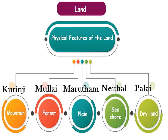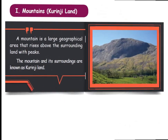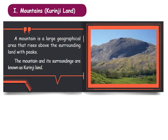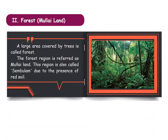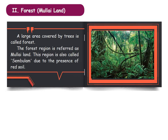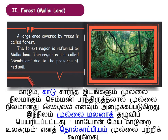The area which rises above the surrounding land with peaks is called mountains. The mountain and its surroundings are called the Kuringi land.